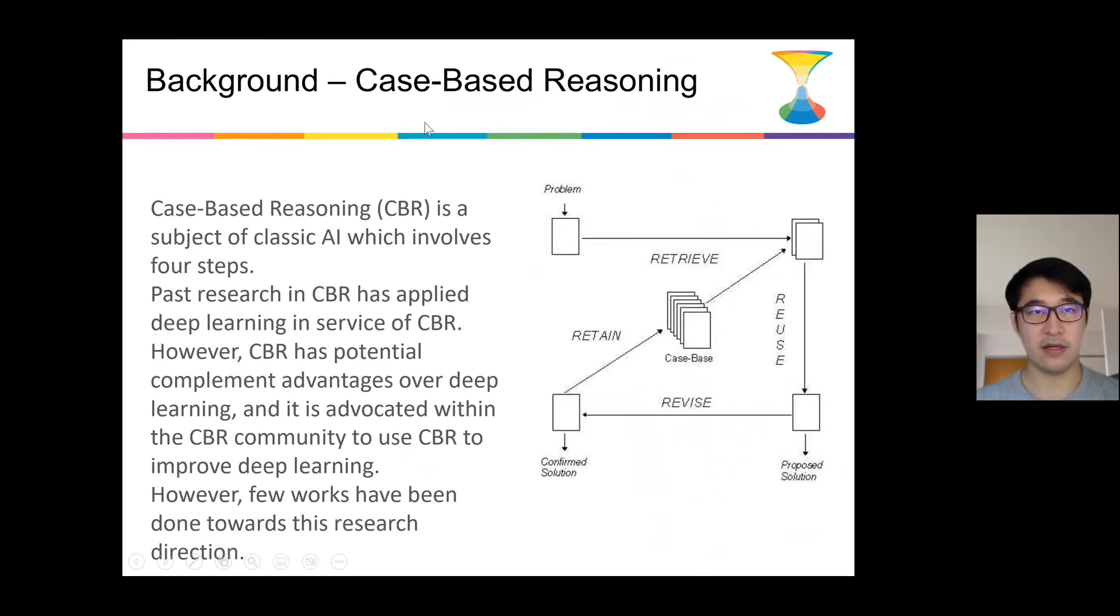And the background also, the case-based reasoning background is that case-based reasoning, also called CBR, is a subject of classical AI which involves four steps, which can be shown in the right figure. When given a new problem, the CBR systems will first retrieve from case-base the past solutions.